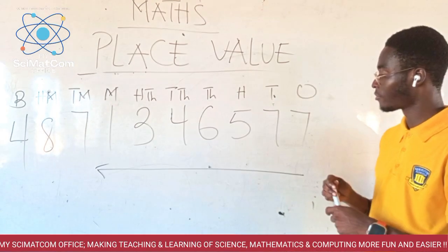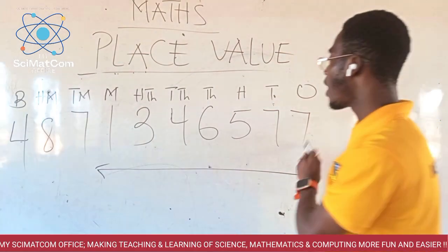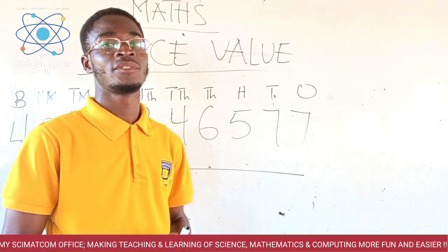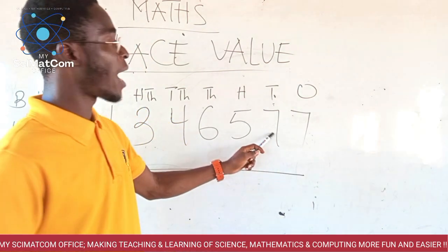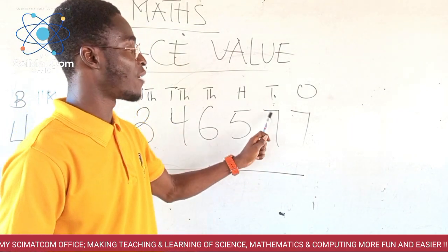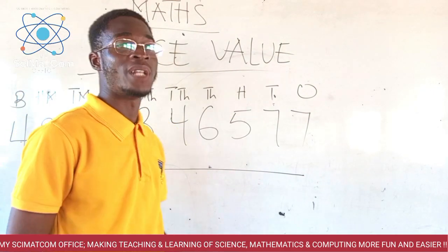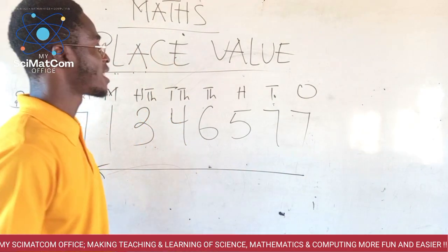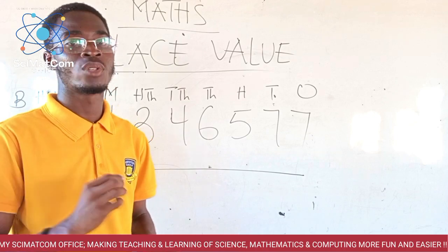Taking the first one, this seven is in the ones place. And because it is ones, the value for this seven is seven. When we come to the next seven, it is in the tens place, and so this seven is 70. When we come to this five, it is in the hundreds place, and so this five is five hundred. When we come to this six, it is in the thousands position, and so this six has the value six thousand.